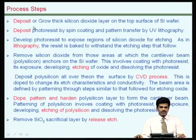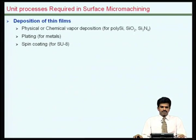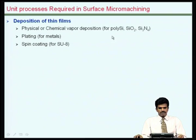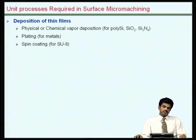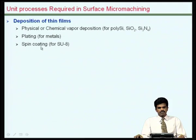We will quickly go through the steps involved in the fabrication of such microstructures. The unit processes required include deposition of thin films, which could be done by physical vapor deposition or chemical vapor deposition. Physical includes techniques such as sputtering or PLD. Chemical is CVD like LP-CVD, which is low pressure, or PE-CVD. If structures are made of metals and required to be thick, electroplating may be required. If structures are made of materials such as SU-8, possibly these can be done by spin coating.